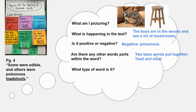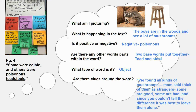What type of word is it? Is it an action, an object, or a describing word? I think it's an object. And this is important — are there clues around the word itself? Let me reread the sentences before and after. The sentence before says, "We found all kinds of mushrooms. Some were edible and others were poisonous toadstools. Mom said to think of them as strangers — some are good, some are bad. And since you couldn't tell the difference, it was best to leave them alone." By reading the clues around the word, I'm getting a feeling that toadstools has something to do with mushrooms — I'm thinking it's a type of mushroom.